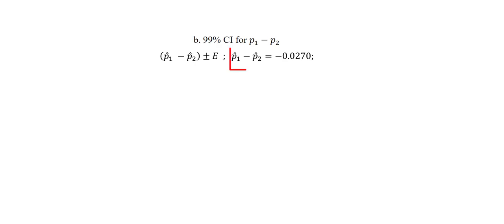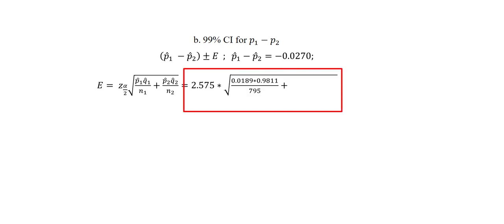My P1 hat minus P2 hat we already obtained previously from the first part of the question. So we have that written down. My E will be the margin of error which is computed by using this formula. Again all of these values we have already used in the first part of the question.